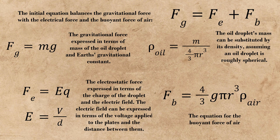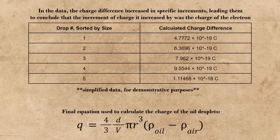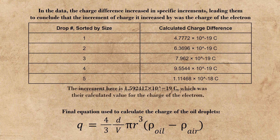What they found was that for different sizes of droplets, the charges went up in identical intervals, leading Millikan and Fletcher to conclude that the charge of the electron was the identical interval that the charges of these droplets went up by.